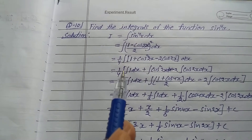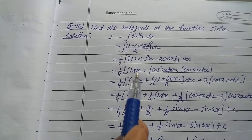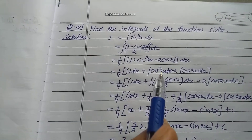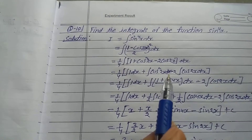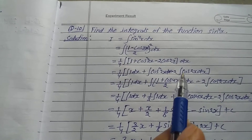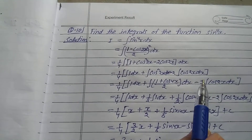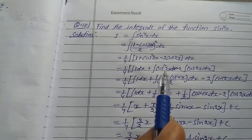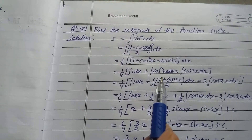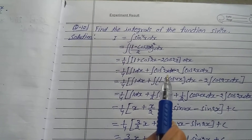Applying integration to all terms: I equals (1/4) times [integration of 1 dx plus integration of cos²2x dx minus 2 times integration of cos2x dx]. Now cos²2x needs a further identity.